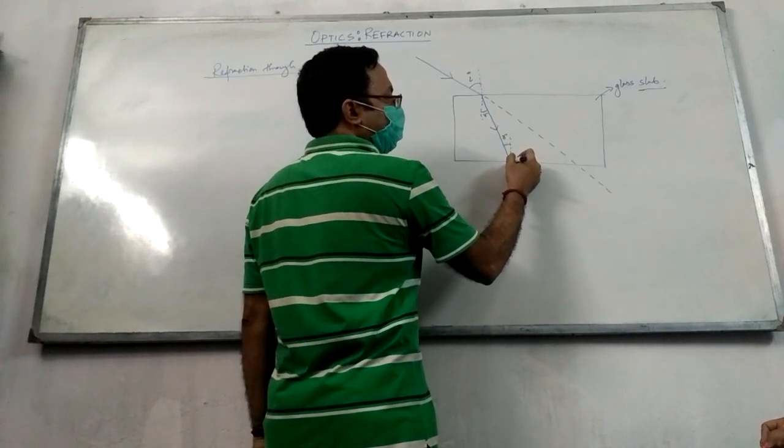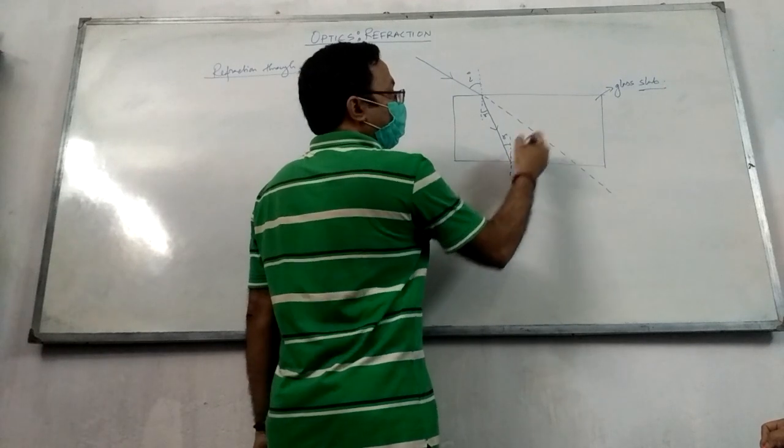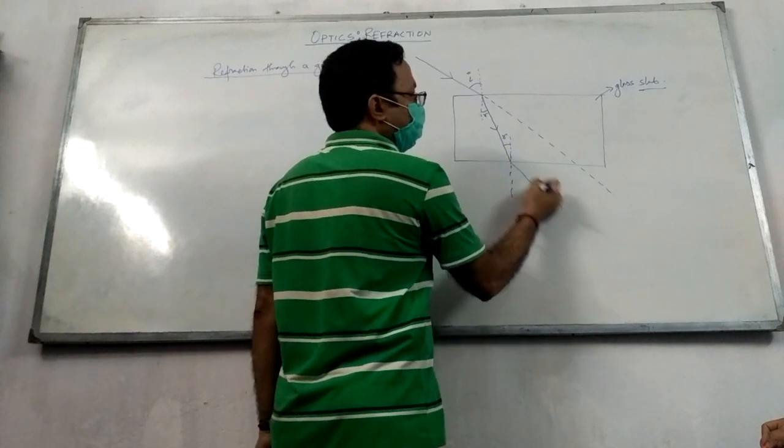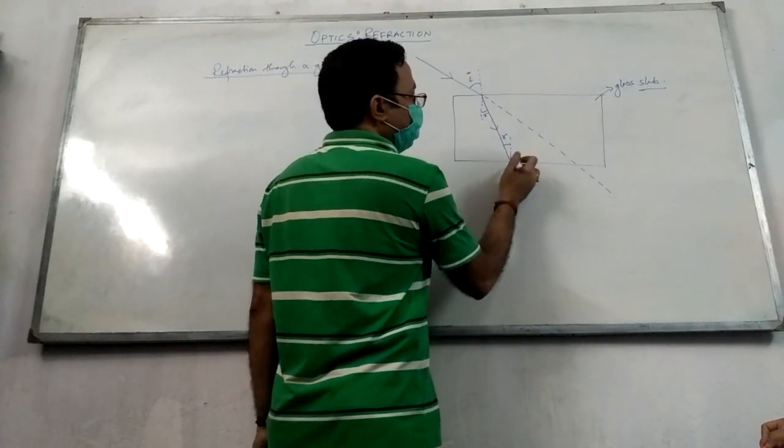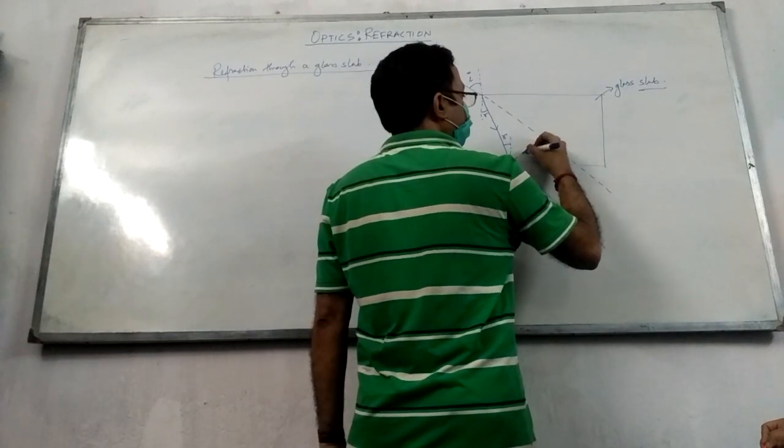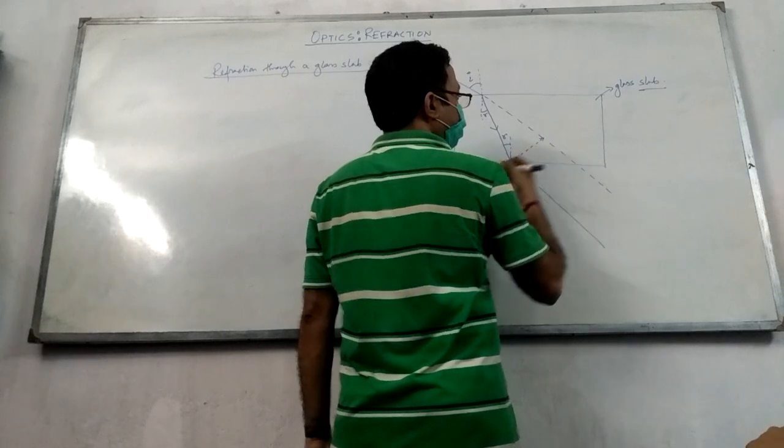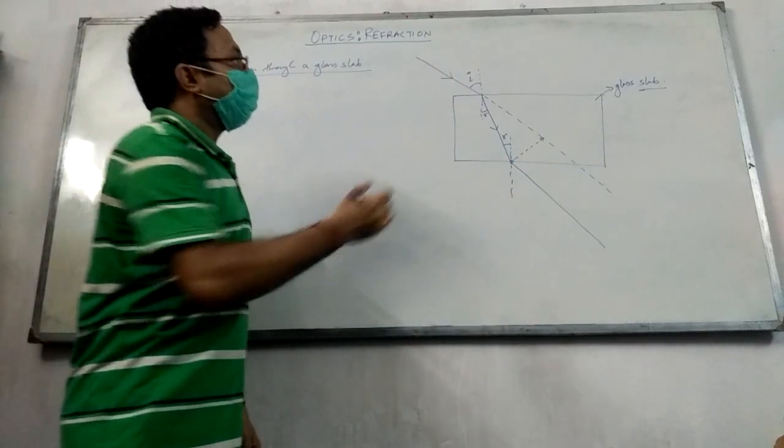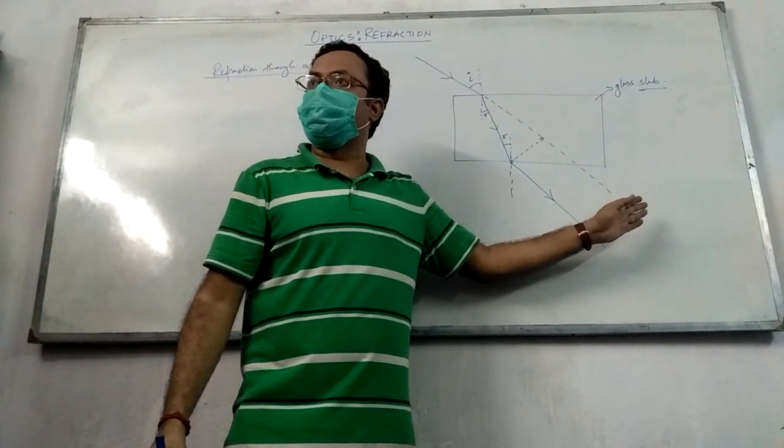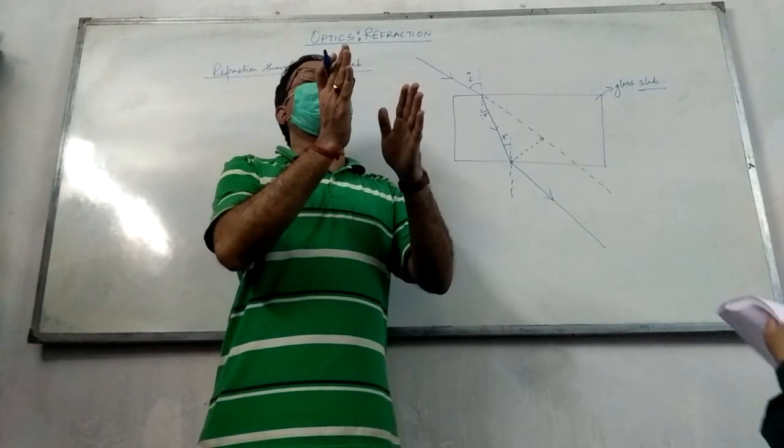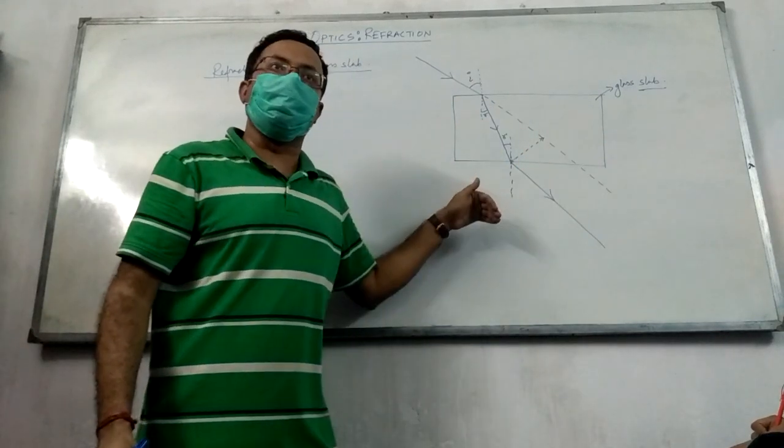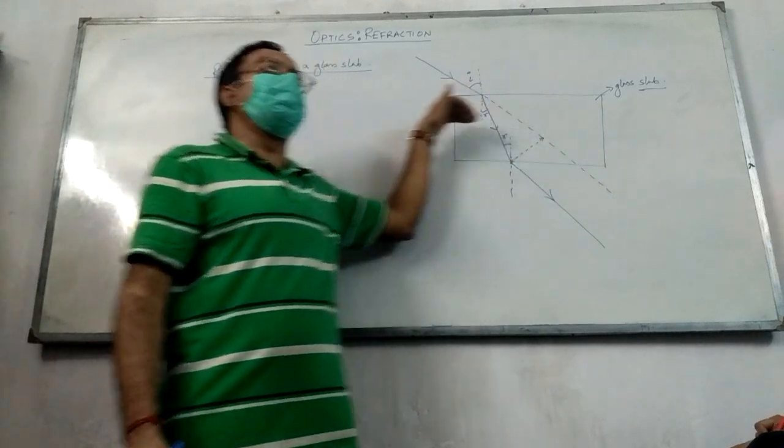And then there will be an emergent ray. Where did you go? Parallel. Parallel, okay. So what is happening? Final emergent ray is coming. This is parallel to the initial direction. So there is no deviation.